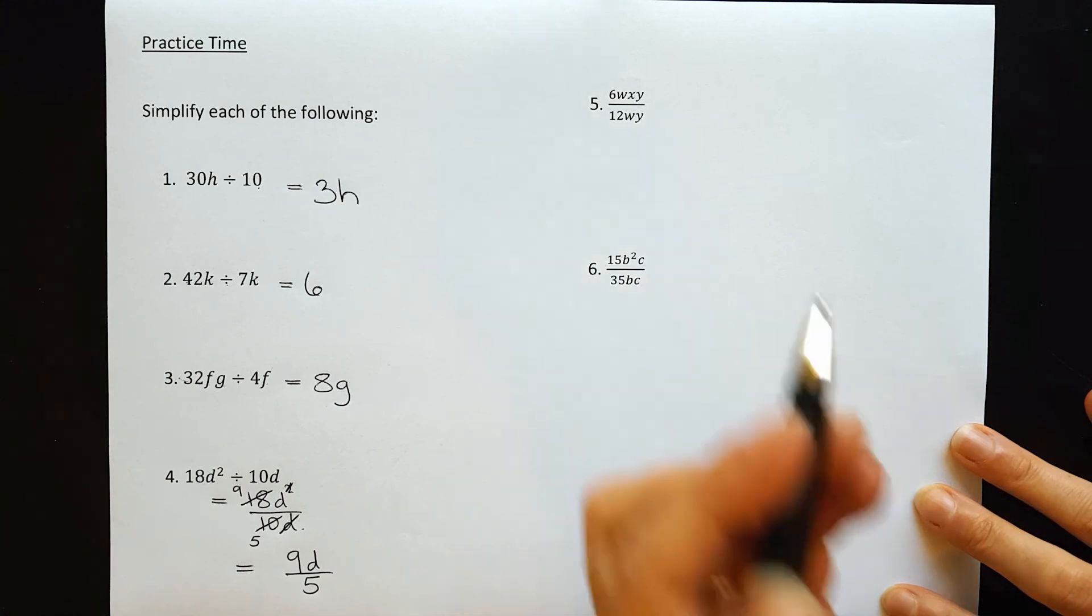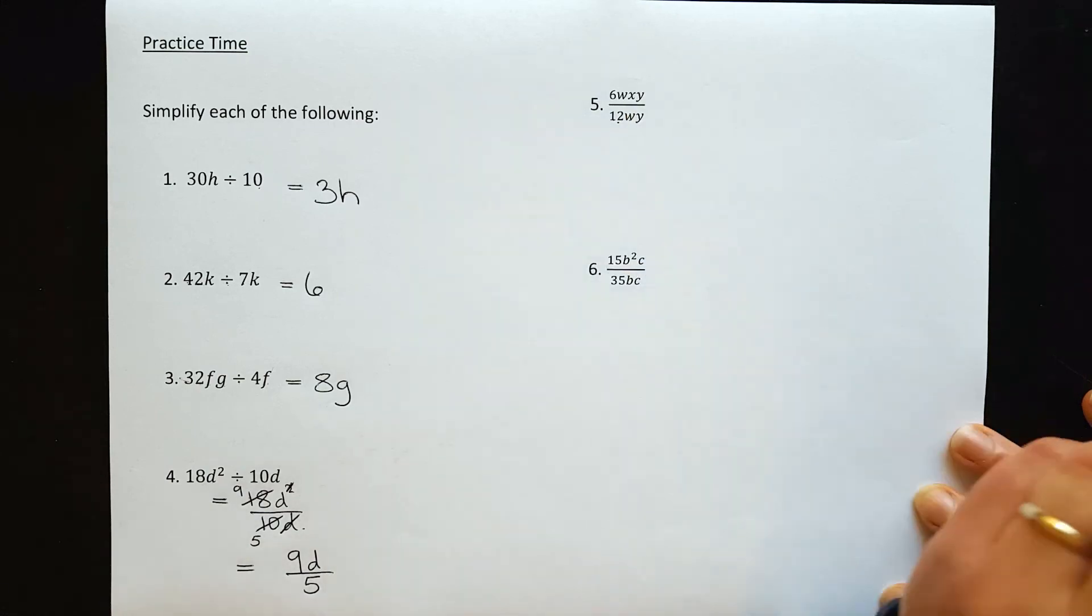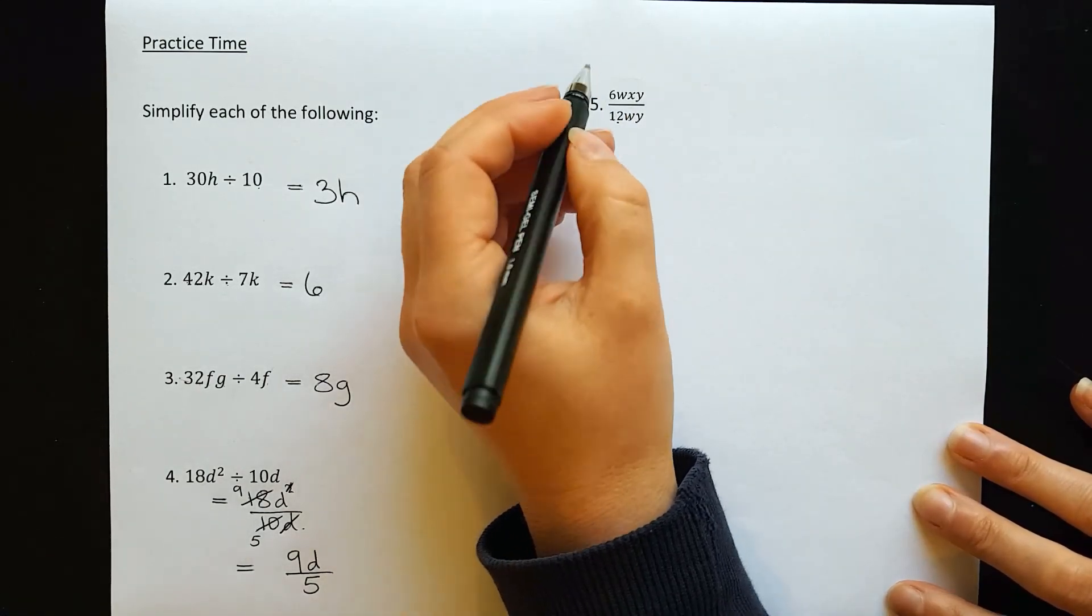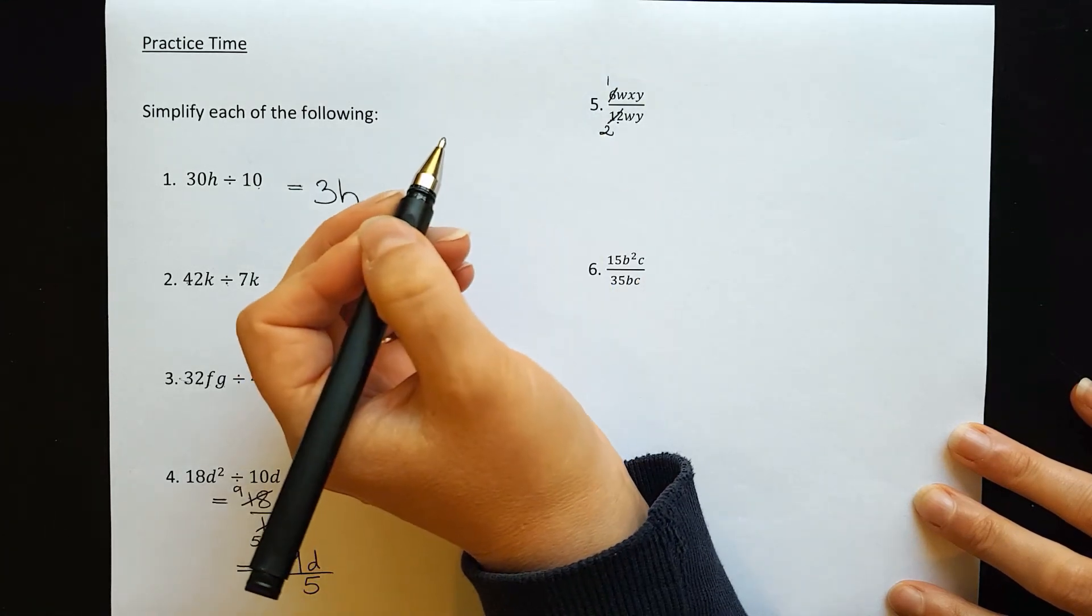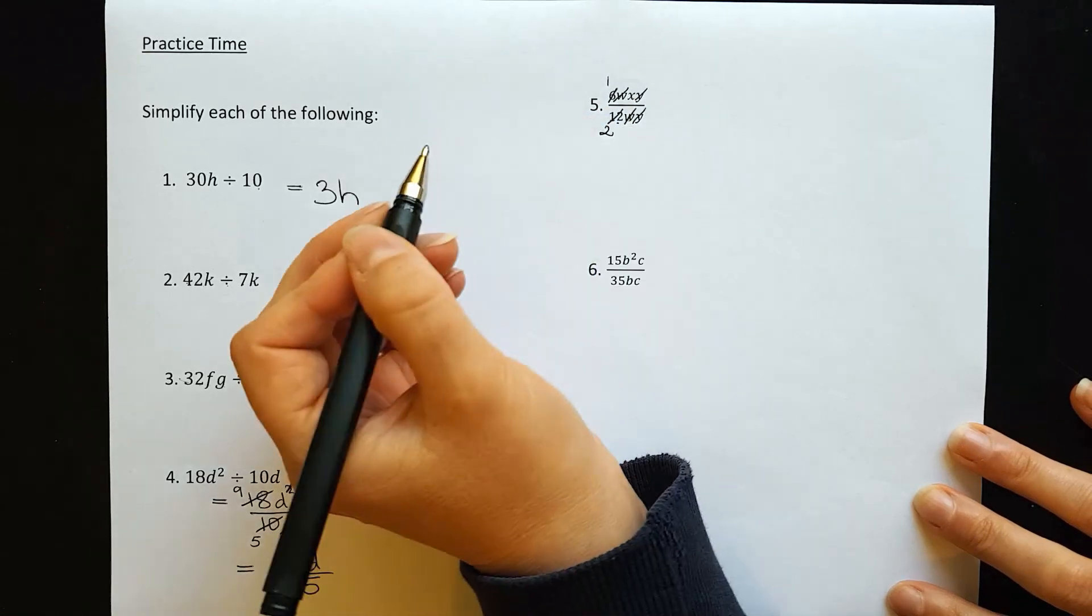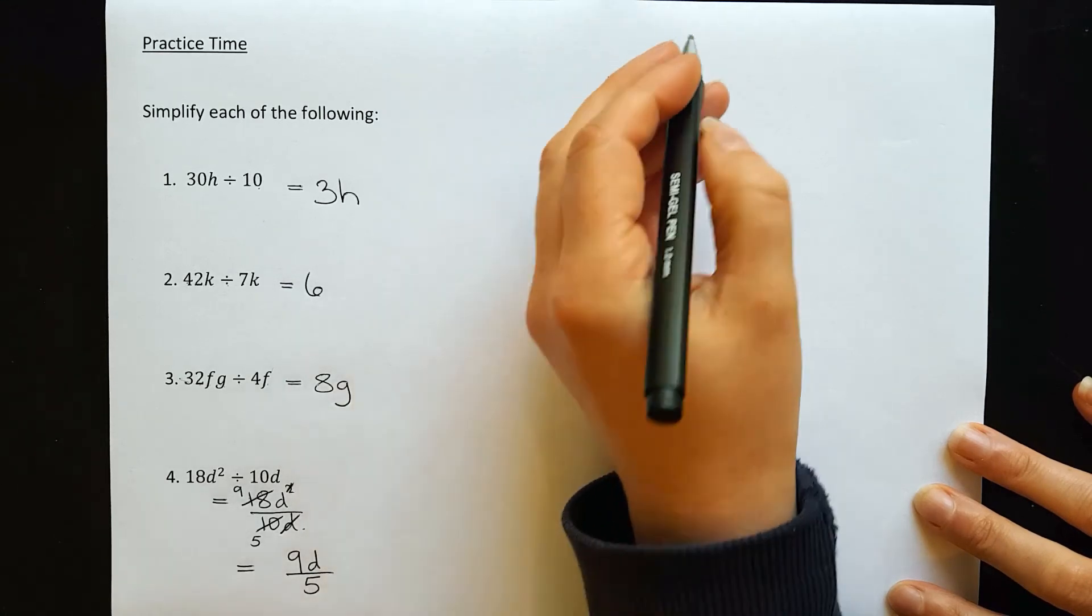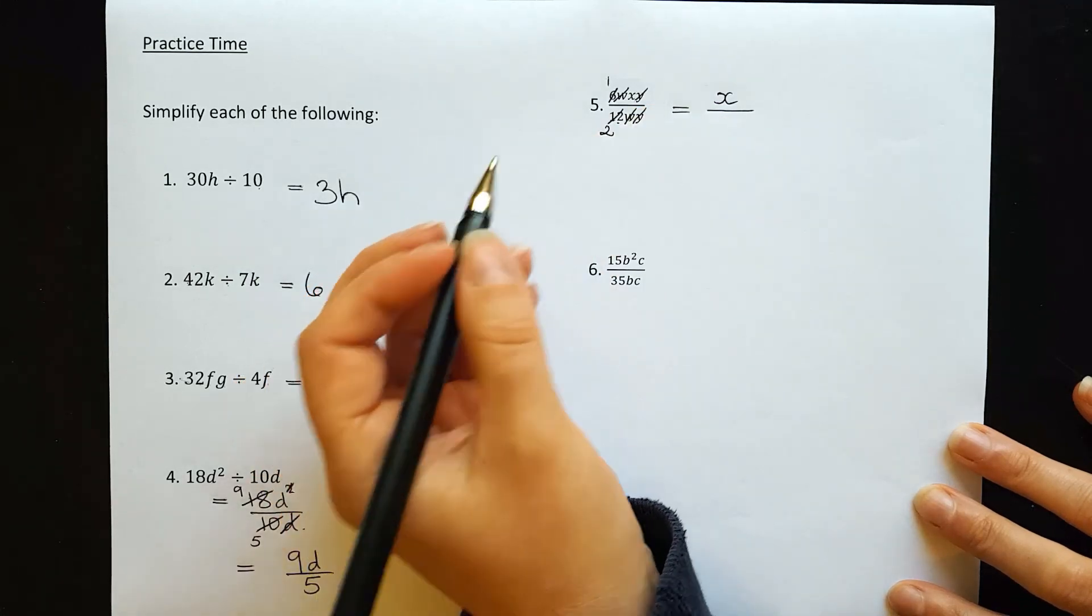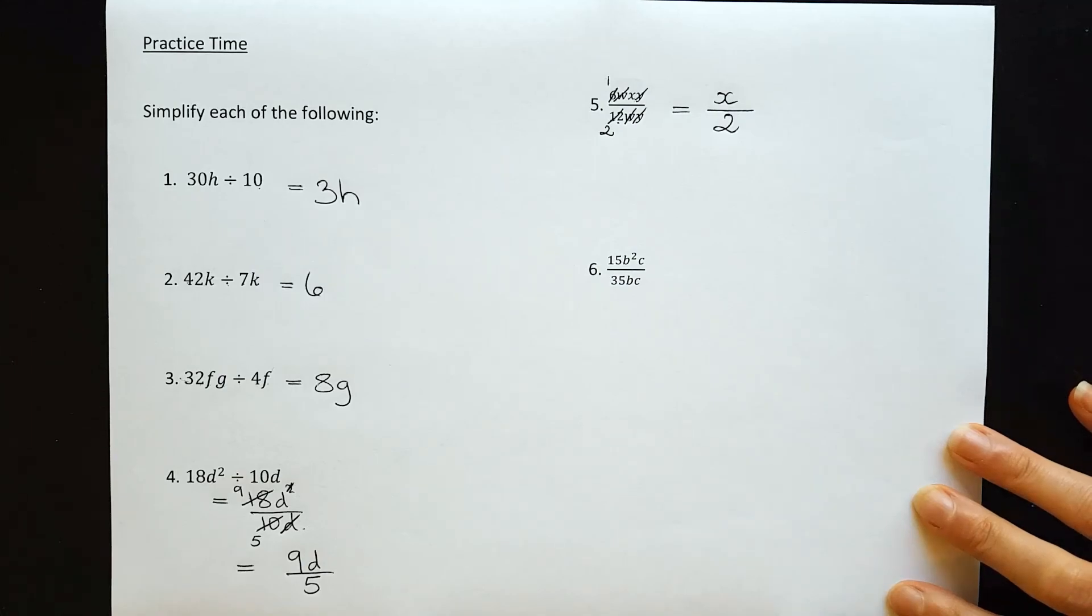Question 5: 6wxy over 12wy. We can divide both numbers by 6, which leaves 1 over 2. W cancels with w, and y cancels with y. All that's left on top is x—we can just write x because that automatically means multiplied by 1. On the bottom, everything's gone except 2. So x over 2 is the answer.